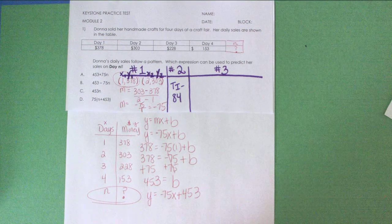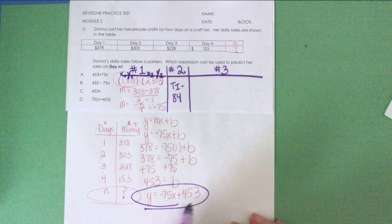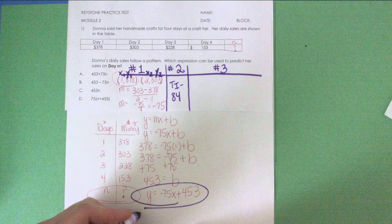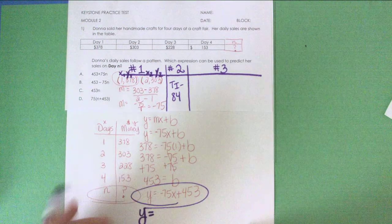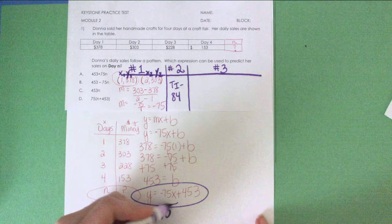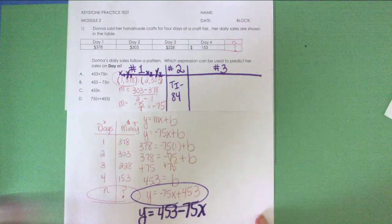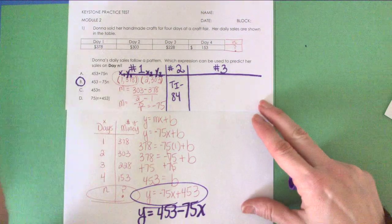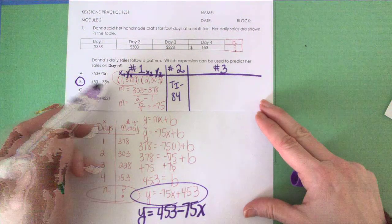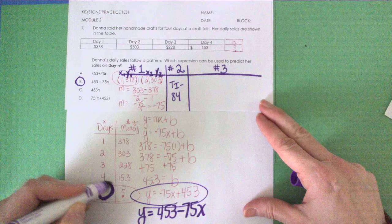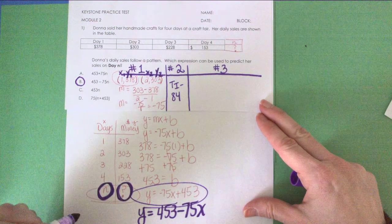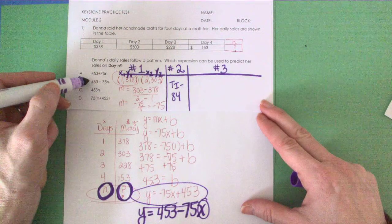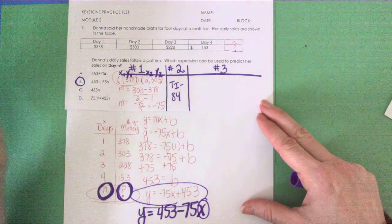So my brain immediately goes to, let's rearrange the furniture here. Let me rewrite this equation with the 453 first, which is very odd because we never really did that. Y equals 453 minus 75X. This looks like answer B to me. They don't have an X, they have an N, but that's what we were going with here on the nth day. So if I just replace this X with an N, I'm going to have this equation right here. So I'm going with letter B, and this is the first way I did the problem.